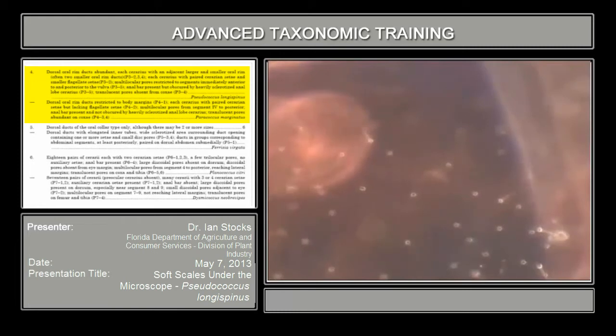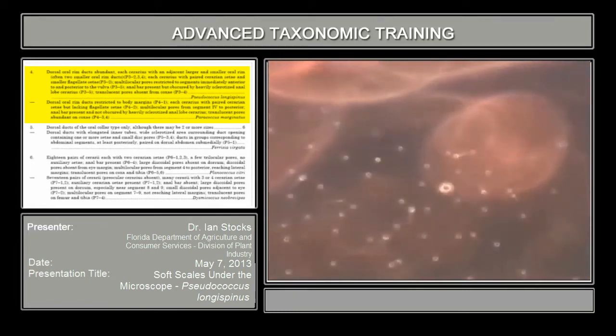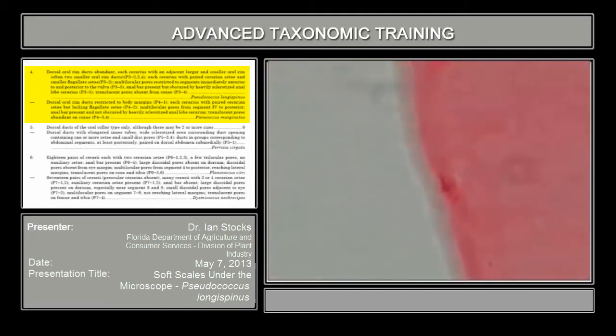All right? So that's actually the first component of the couplet for the long-tailed mealybug, the longispinus. Okay? The other thing that's important to look at for this one, and it's actually in the key here, I'm trying to get a good picture on the screen, is that the serarius has not just the serarian setae or the sockets that indicate that they're there. It has a concentration of trilocular pores.